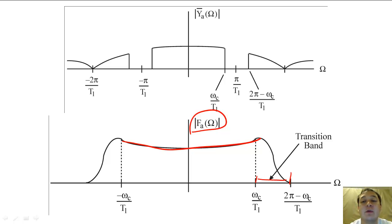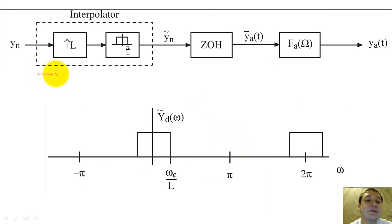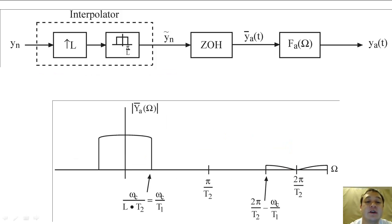If we interpolate Y sub N first, we can create a Y sub D with much more space between the highest frequency of the K equals zero replicate and the lowest frequency of the K equals negative one replicate. When we pass the interpolated signal through the zero-order hold component, the sync function does not warp the K equals zero replicate nearly as much as before.